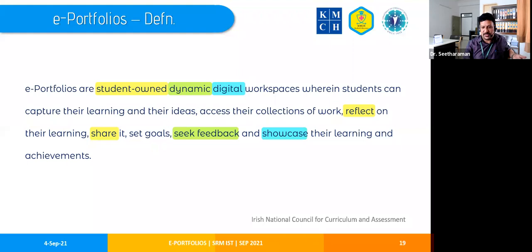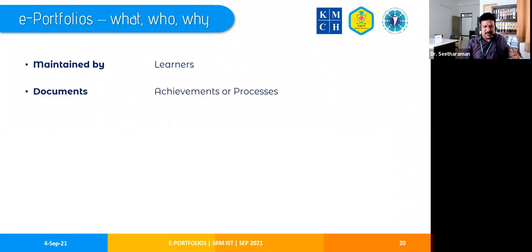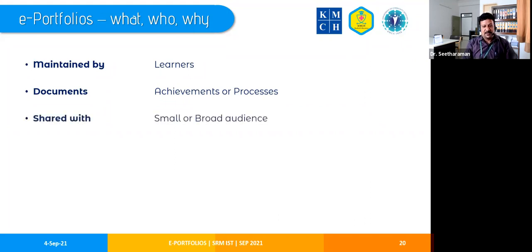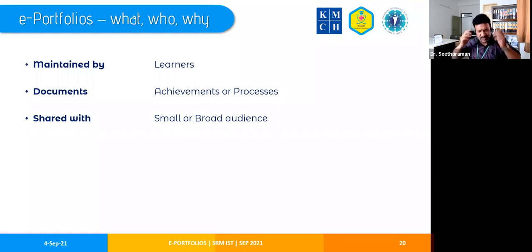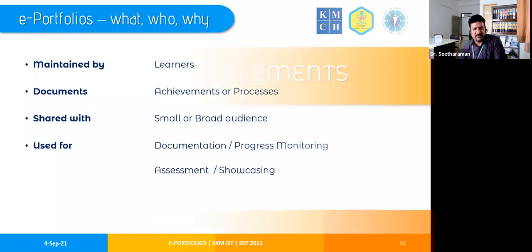The e-portfolio is maintained by the student, documents both achievements and processes, and is shared — sometimes with a small group, sometimes within the institute, or even with a broader audience like a professional network or the general public. It's used for documentation, progress monitoring, assessment, and showcasing. Since it's electronic, it can be shared with multiple people simultaneously — unlike a physical record book that can only be in one place.